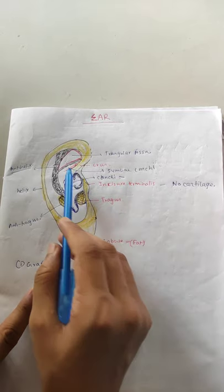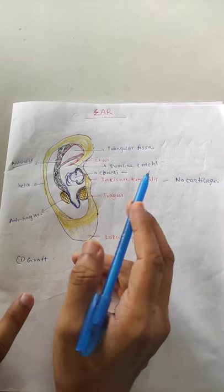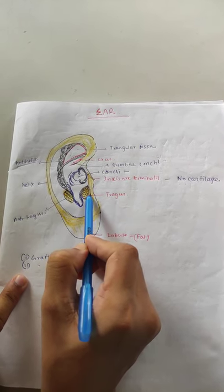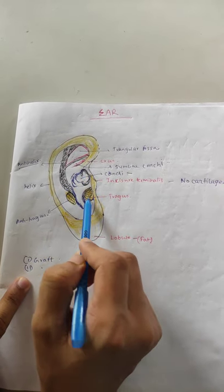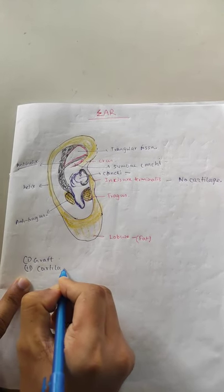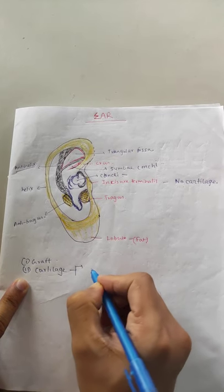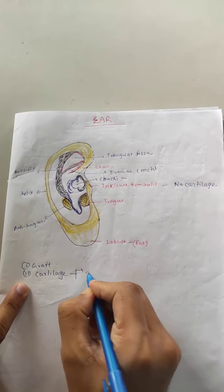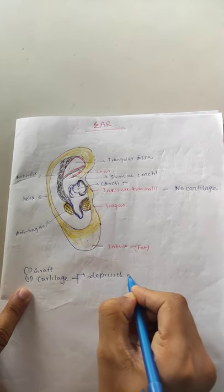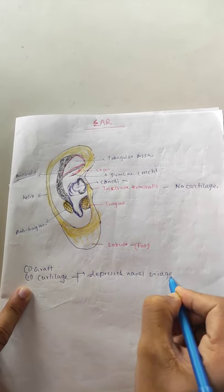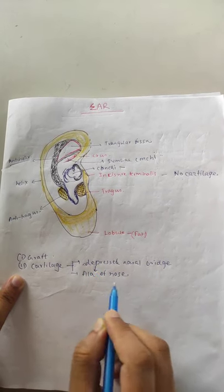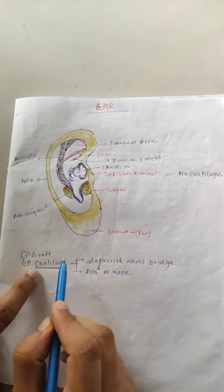In the middle ear, we need to graft cartilage. Number two, the cartilage supply from the pinna is used to correct a depressed nasal bridge and the ala of the nose.